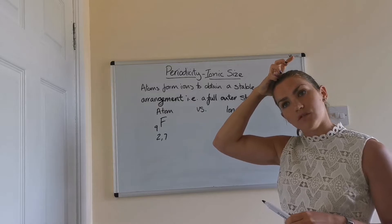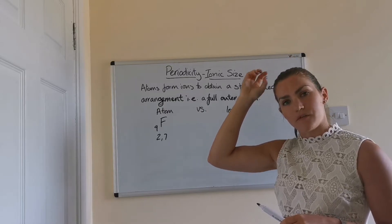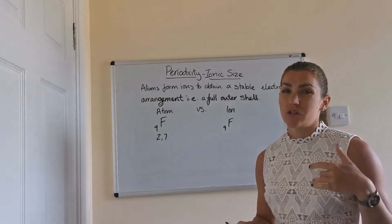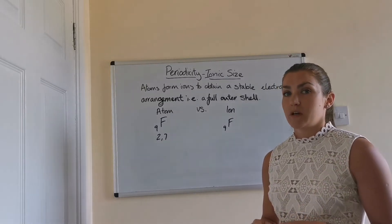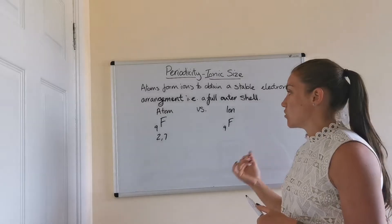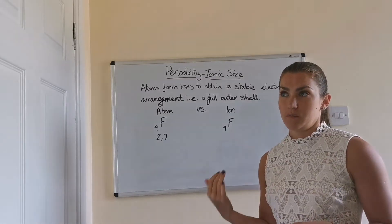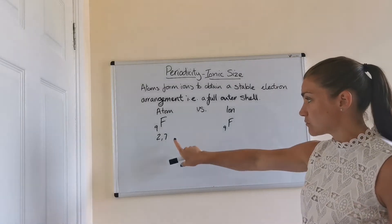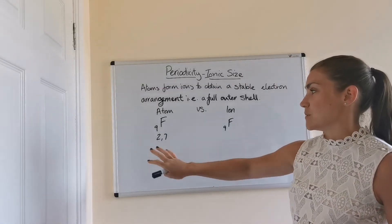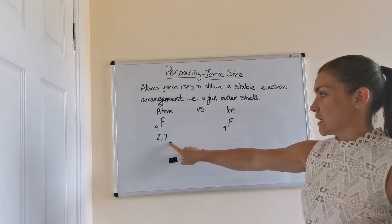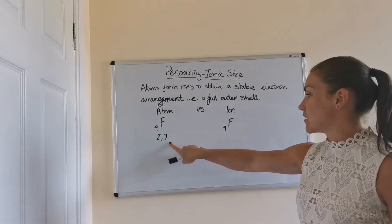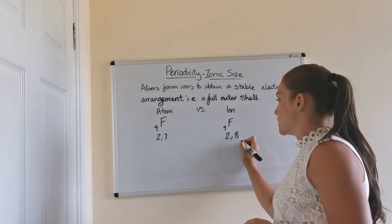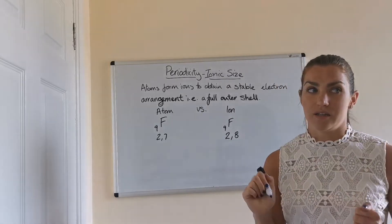Now if we look at a non-metal atom — remember from National 5 that when metal atoms become ions, they always lose electrons to become stable, and when non-metal atoms become ions, they always gain electrons to become stable. If we look at fluorine as an atom, it's got the arrangement 2,7. To fill its outer shell it needs to have 8, so it's going to gain an electron, and the fluorine ion becomes 2,8, which is the same electron arrangement as neon.